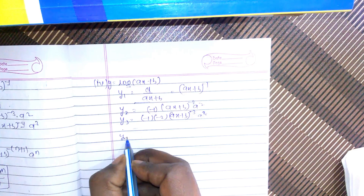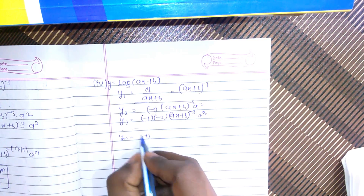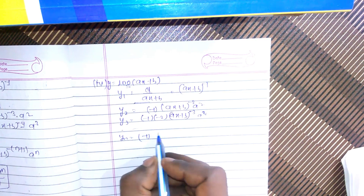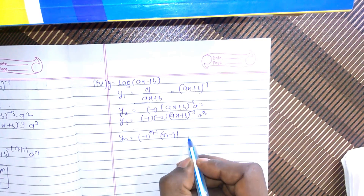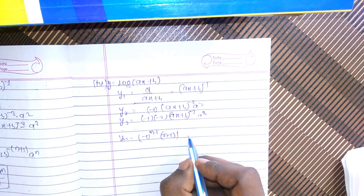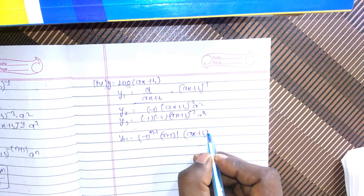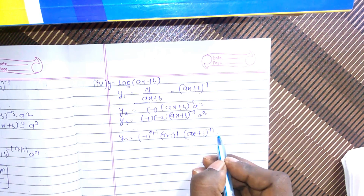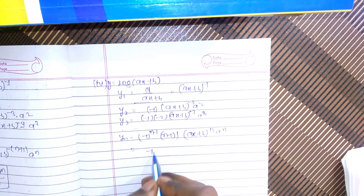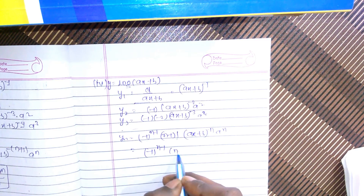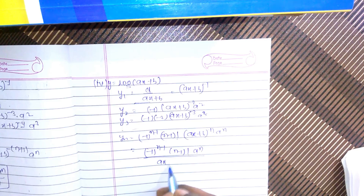Generalizing the equation for log(ax+b): yn equals (−1)^(n−1) times (n−1)! times a^n times (ax+b)^(−n). So the nth derivative of log(ax+b) is given by this formula.